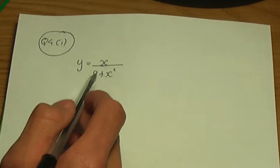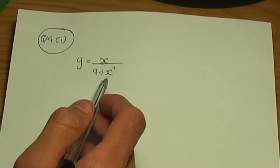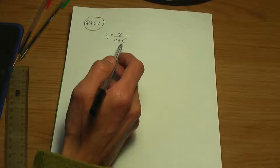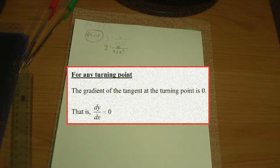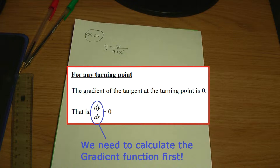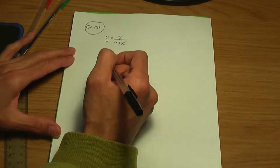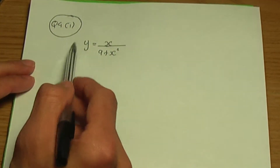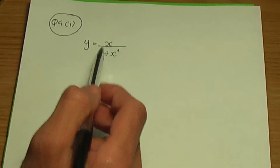Let's go back to the paper and pen. Here's the curve equation: y equals x over 9 plus x squared. Now let's think about what we need in order to work out the coordinates of the turning or stationary points. To find the turning points, remember the condition that the gradient of the tangent is 0, so we need to work out dy over dx — the gradient function. Since I have a quotient of two functions, let's apply the quotient rule.